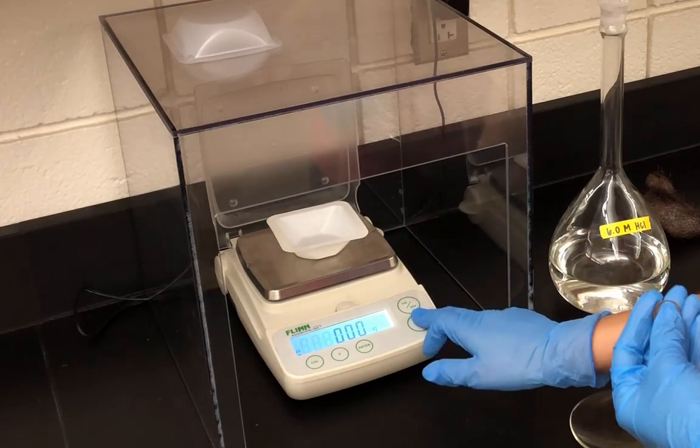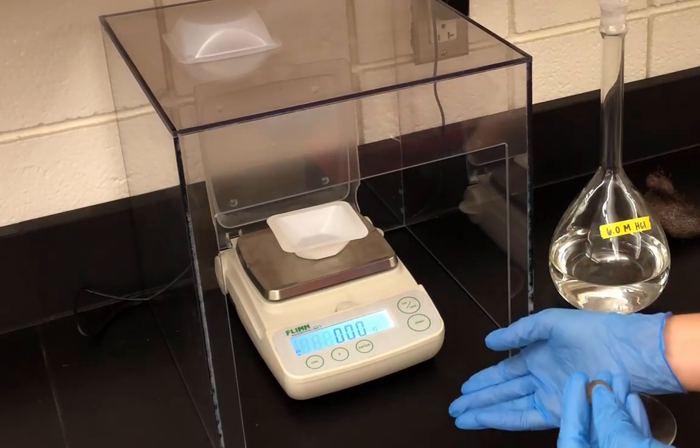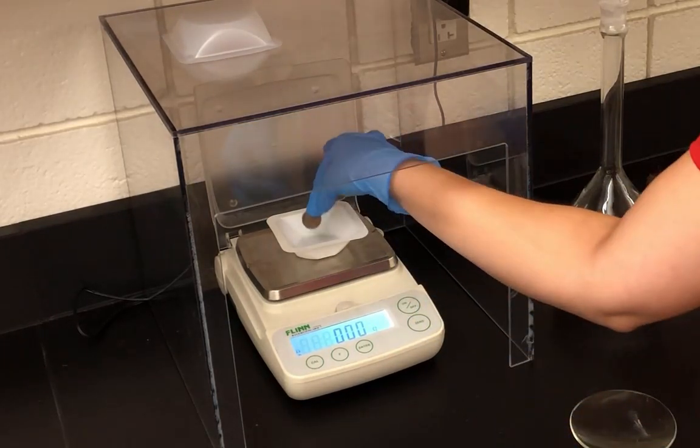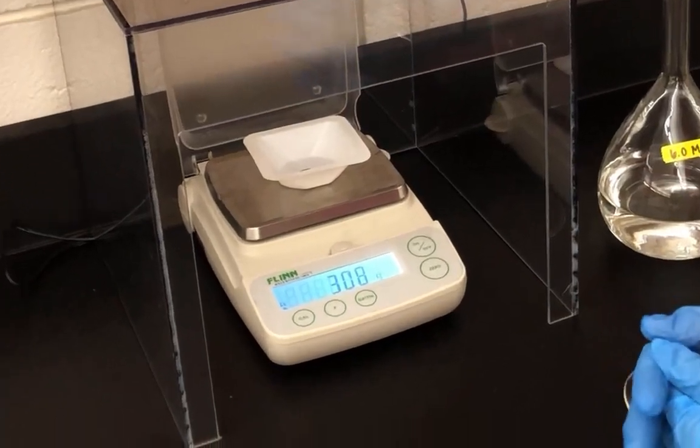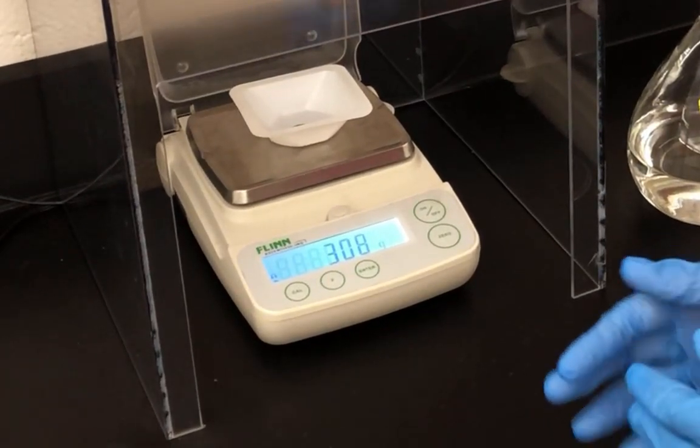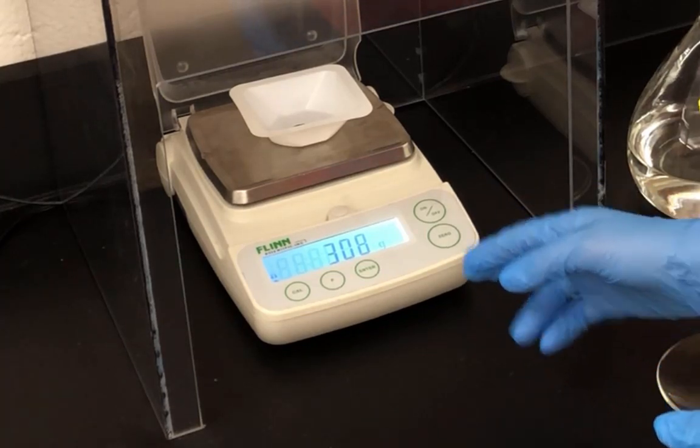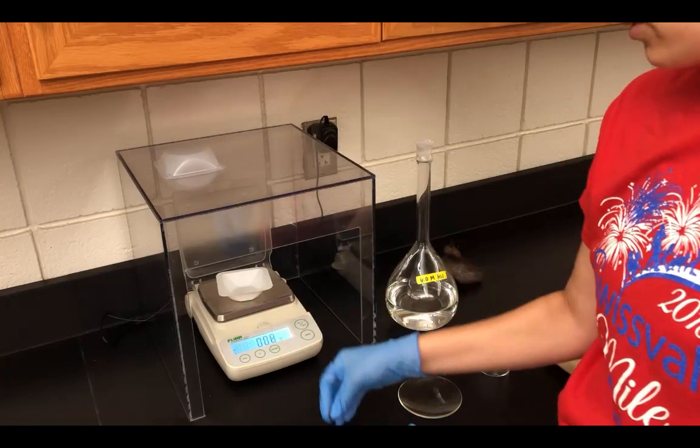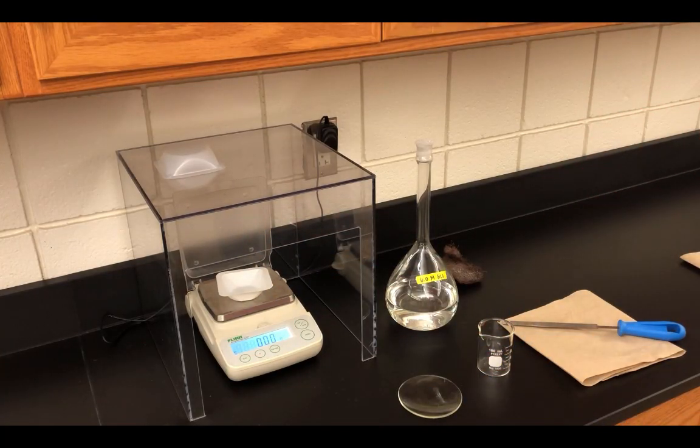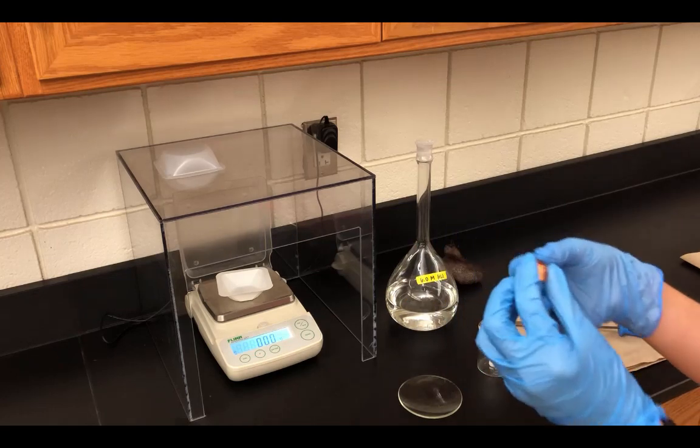If it's not zeroed, hit zero, then put the penny into the weigh boat. The mass of this pre-1982 penny is 3.08 grams. Record 3.08 grams in your lab notebook.